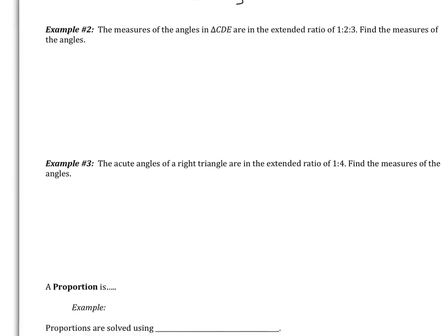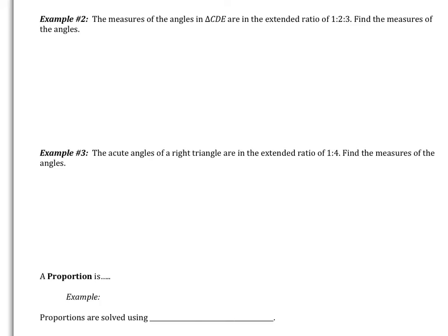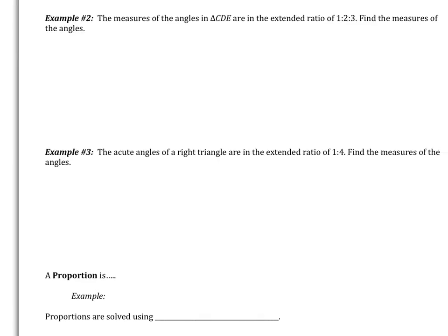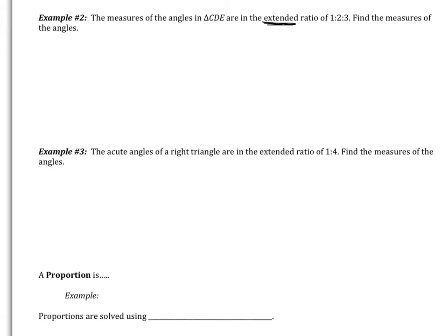Moving on, examples 2 and 3 are going to get a little more difficult. Example 2 says the measures of the angles in triangle CDE are in the extended ratio of 1 to 2 to 3. Find the measures of the angles. Something new is it says extended ratio. All that means is that we're comparing more than 2 quantities. So here we have 1, 2, 3 quantities we're comparing, not 2 of them. So let's just draw ourselves a triangle. This is triangle CDE.